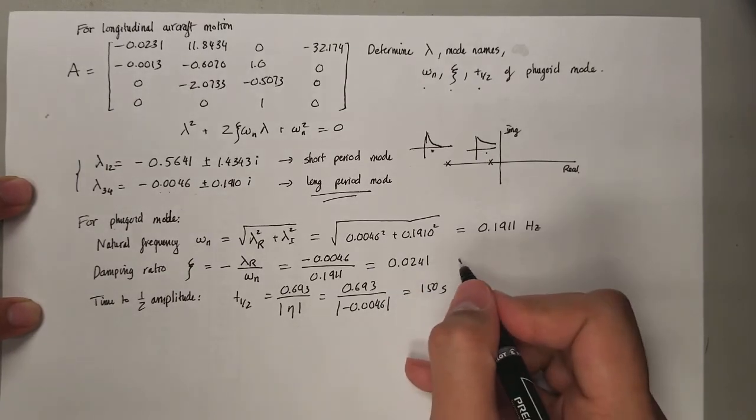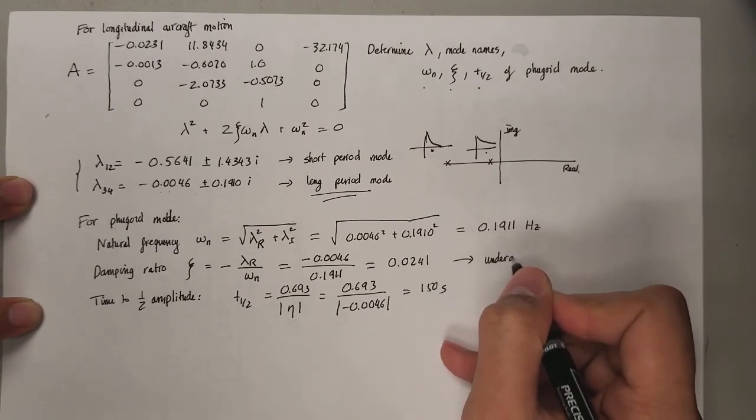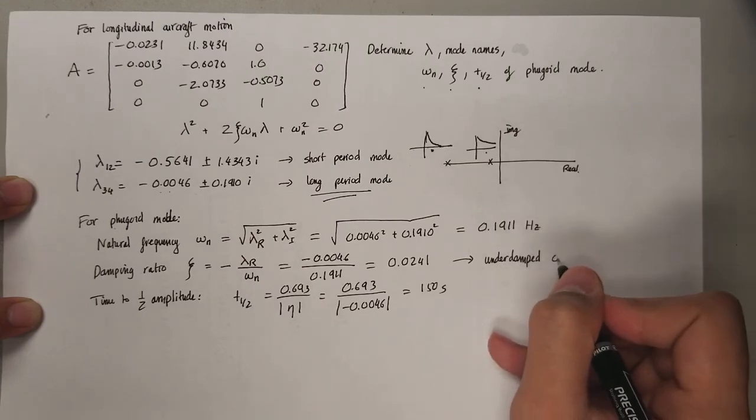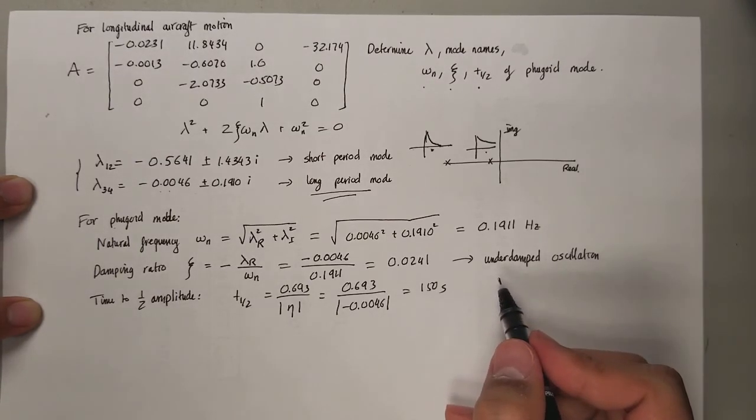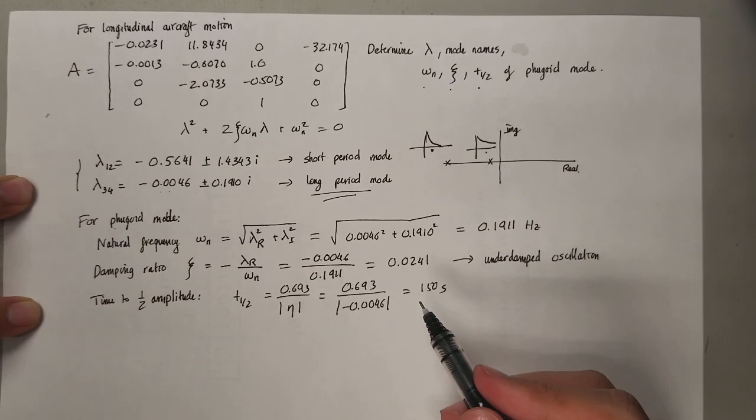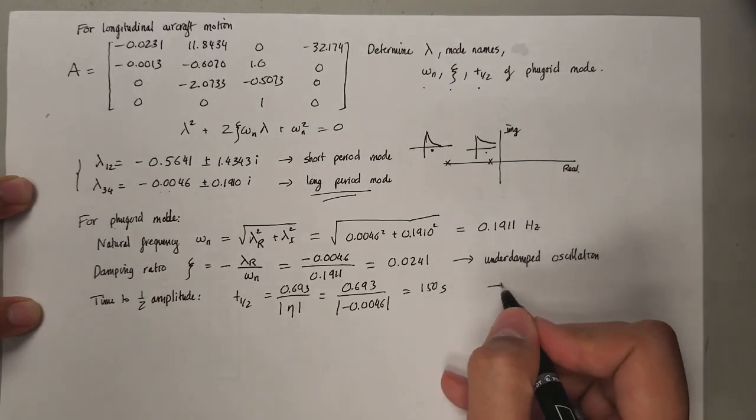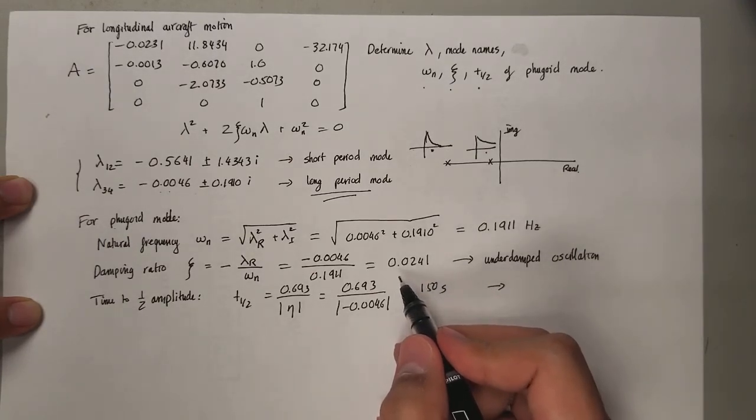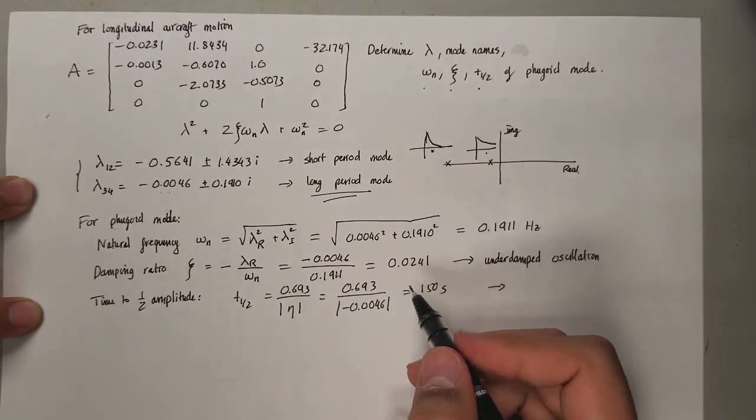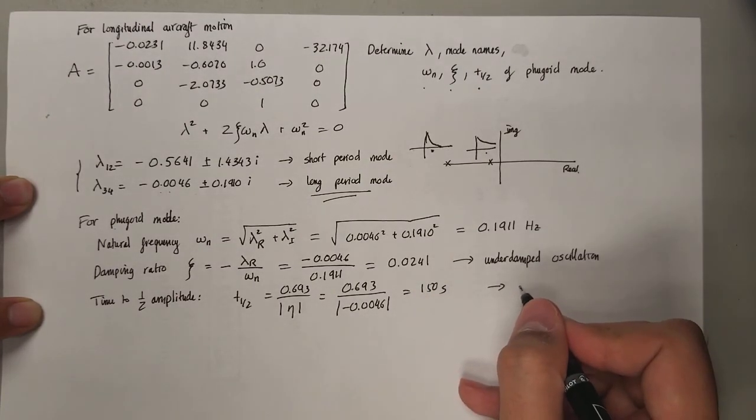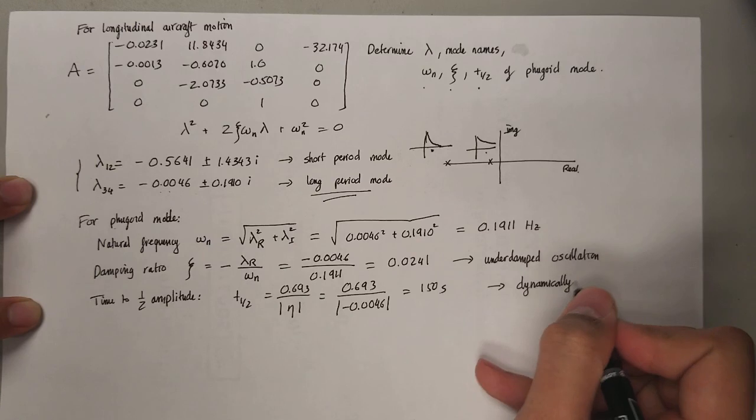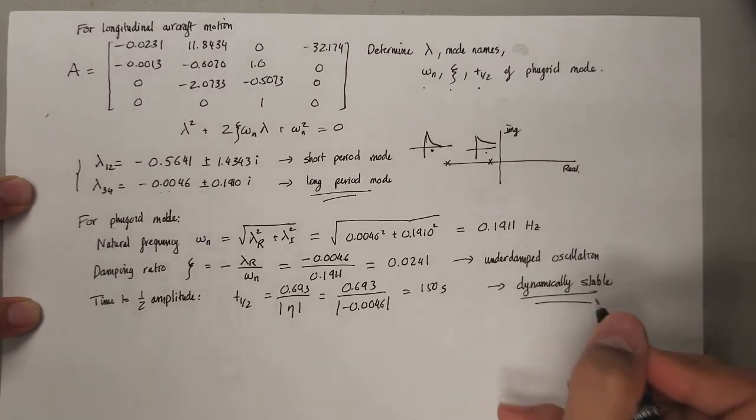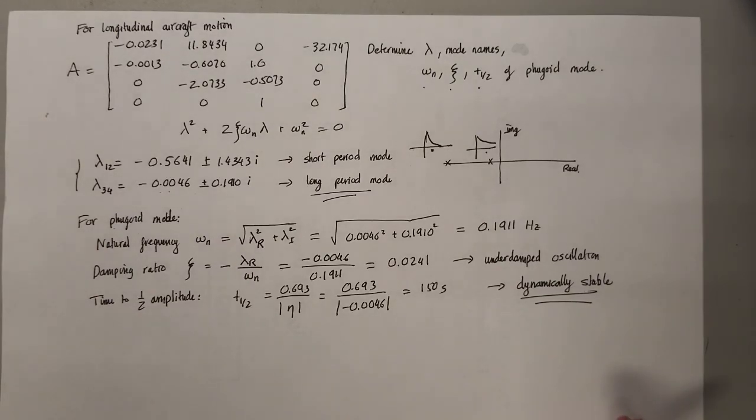If you look at the damping ratio right there, you can see that this is an underdamped oscillation. So for underdamped oscillation, from these given values you can come to the conclusion that the aircraft is dynamically stable. Alright, thanks for watching guys, good luck with that.